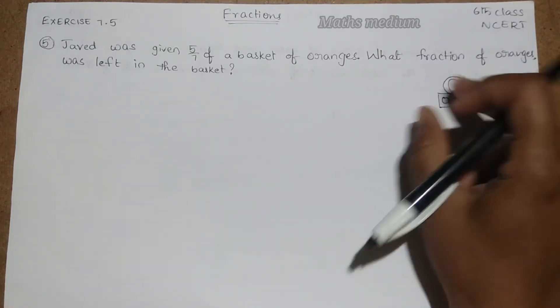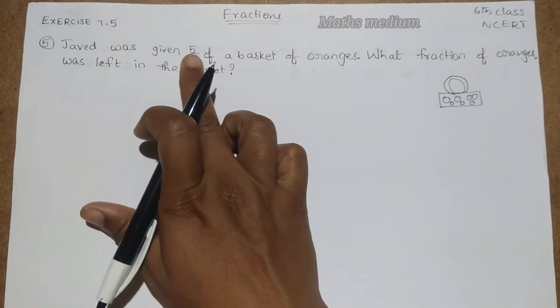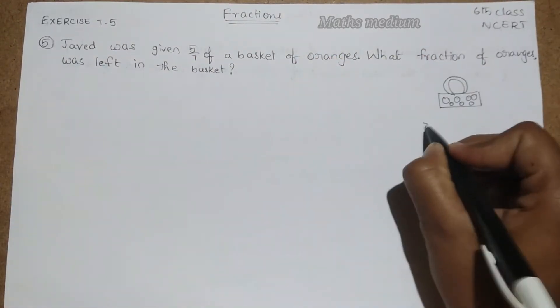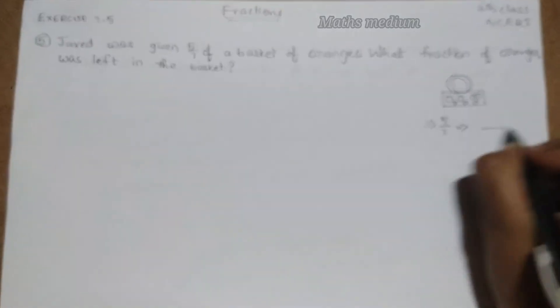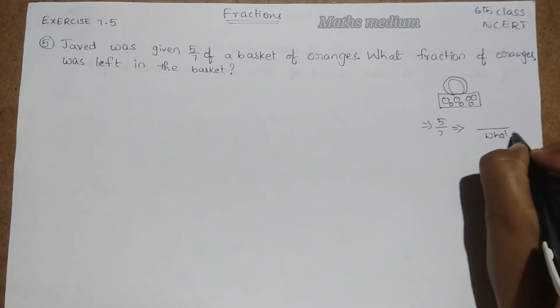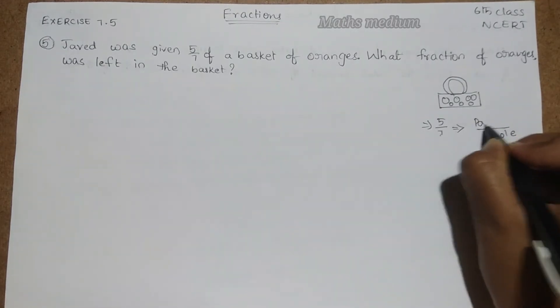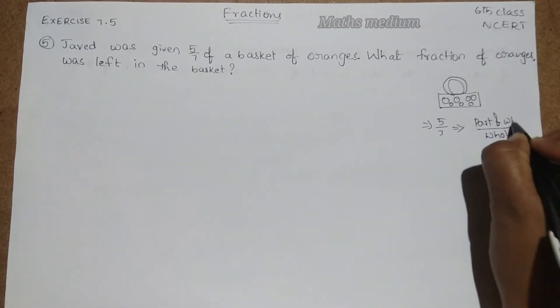In this, Javed given 5 by 7 of the basket of oranges, so 5 by 7.